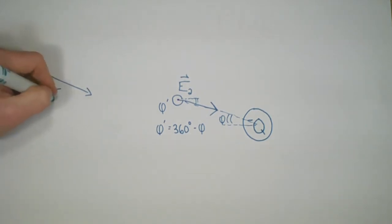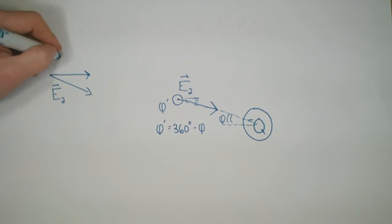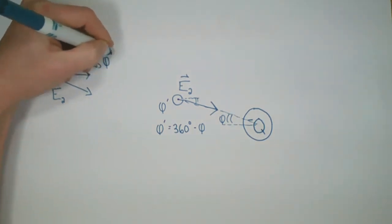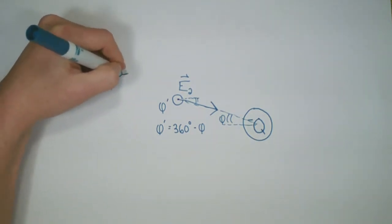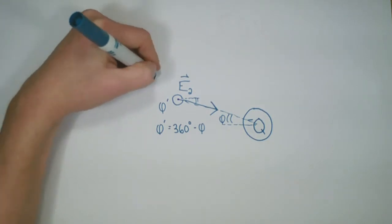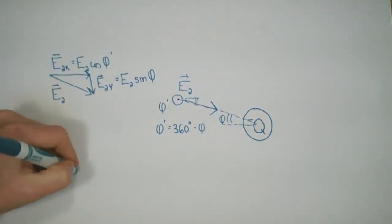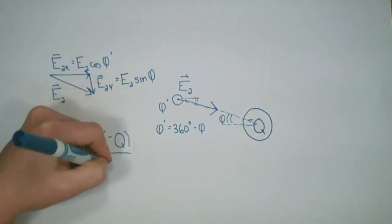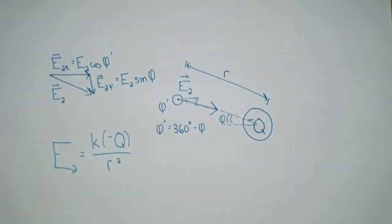For E2, we define its x component: E2x equals the magnitude of E2 multiplied by the cosine of phi prime. E2y equals the magnitude of E2 multiplied by the sine of phi prime. E2 is equal to k multiplied by the negative charge q divided by the separation squared, where the separation is from the charge to the point of interest.